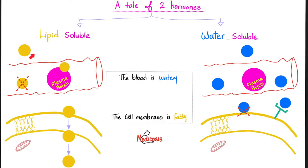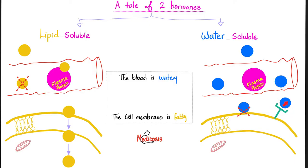Why are lipid-soluble hormones slow? Because if you are lipid-soluble, you cannot float freely in water — the plasma — so a plasma protein must carry you. When you reach the lipid bilayer cell membrane, you can diffuse on your own, like a sharp knife in warm butter. But this diffusion takes time — that's why lipid-soluble hormones are slow in action. Conversely, water-soluble hormones float easily in blood, but cannot diffuse through the membrane. The receptor is on the outside waiting. Once you bind to your receptor, it's super fast — just like flipping a switch. That's why water-soluble hormones are faster in action.